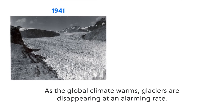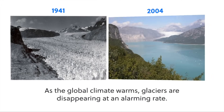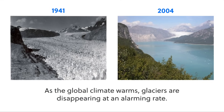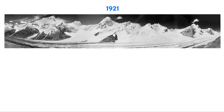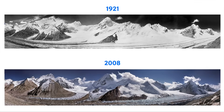As climate change continues and the planet warms, including the oceans and the atmosphere, we're starting to see the disappearance of large-scale glaciation. If you look at this comparison of the same spot 60 years apart, you'll notice that the majority of the ice has disappeared. The same thing can be seen here.